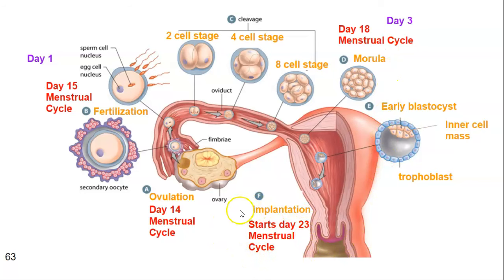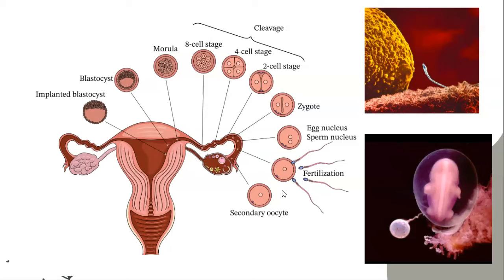By day 28, when we start to see the menstrual cycle starting, if they are pregnant, it would be day five of pregnancy. And they wouldn't get that flow of blood because they have implantation occurring. So again, this is the process of what it looks like.